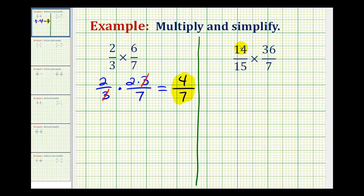So the prime factorization of 14 is 2 times 7. The prime factorization of 15 would be 3 times 5. 7 is already a prime number, and for 36, we'd have 2 factors of 2 and 2 factors of 3.